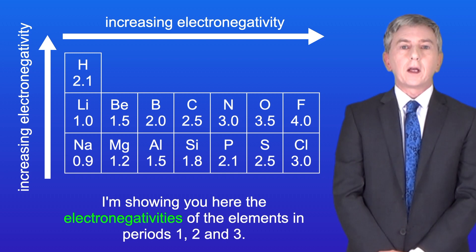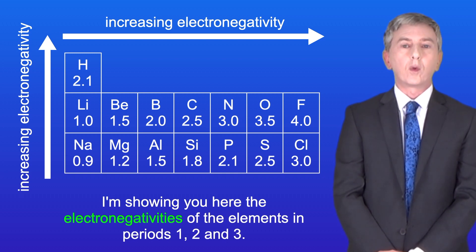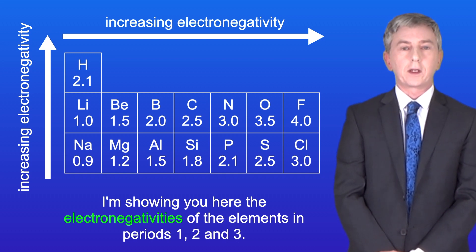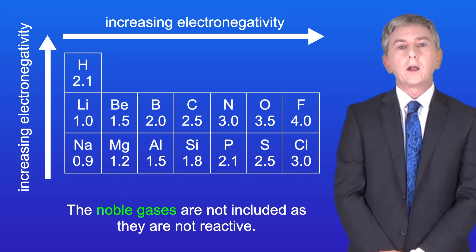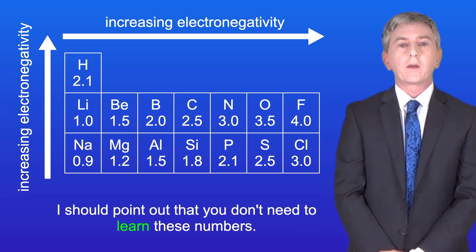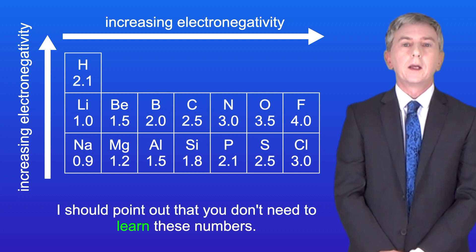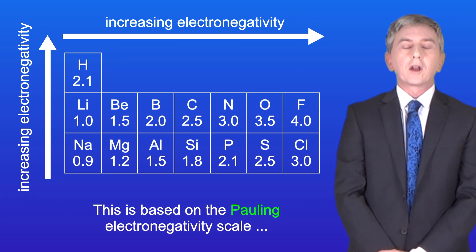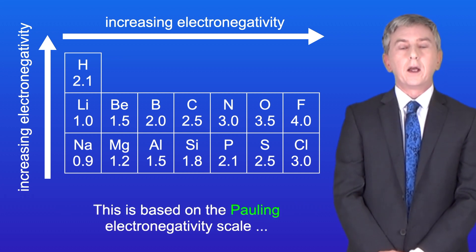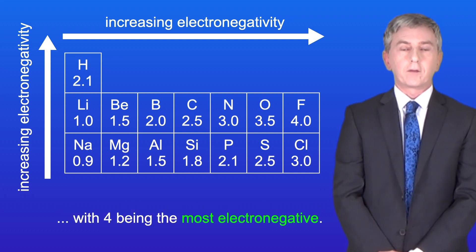Here I'm showing the electronegativities of the elements in periods 1, 2, and 3. The noble gases are not included as they're not reactive, and you don't need to learn these numbers. This is based on the Pauling electronegativity scale, with 4 being the most electronegative.